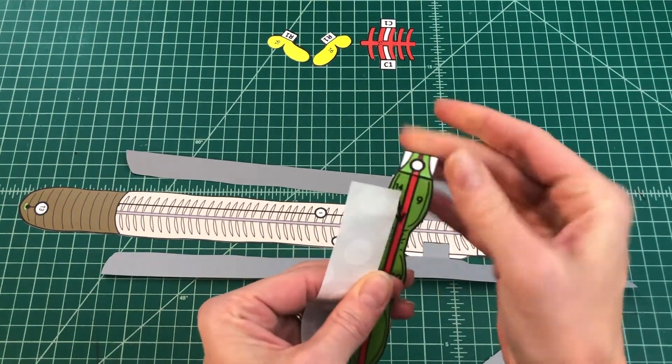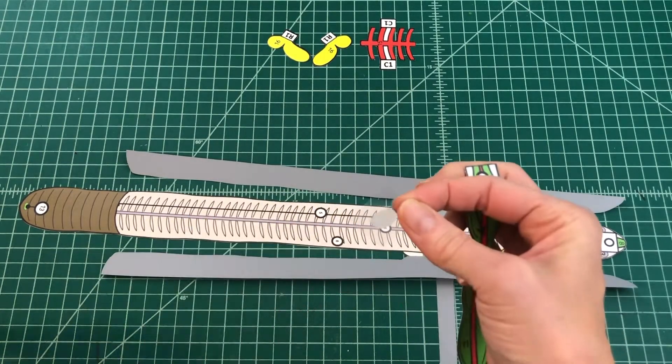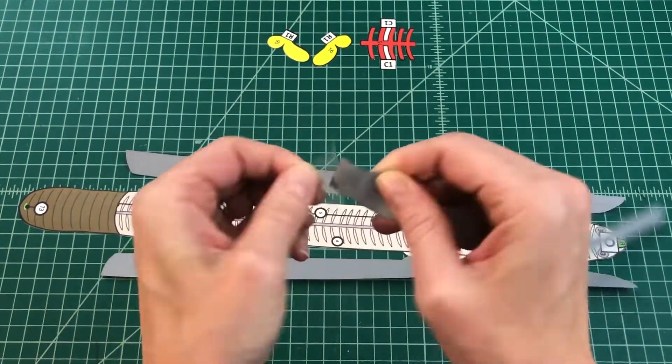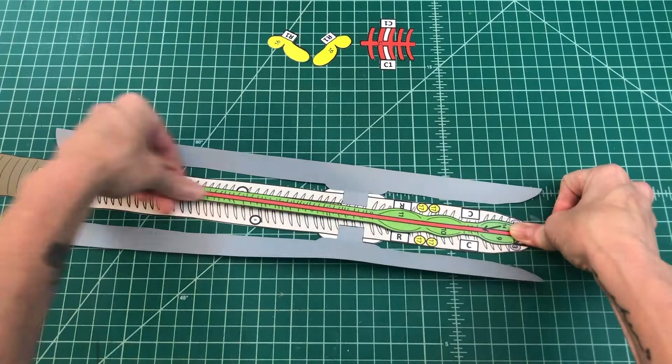Number three: Apply glue to the back of the tab O and attach the digestive tract by tab O to O on the internal worm.